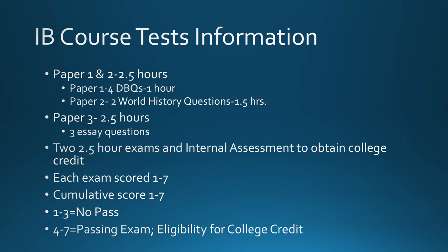Each exam is scored on a scale of one to seven, and based on that and the percentage weighting, you are given a cumulative score from one to seven. A score of one to three means you did not pass. A four to seven is considered a passing exam and gives you eligibility for college credit. You need to check the colleges you are applying to in order to see exactly what their protocol is, but that's the standard we want to be looking at.